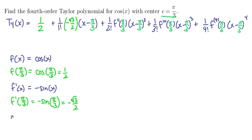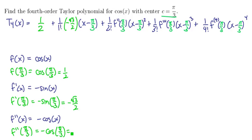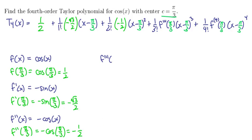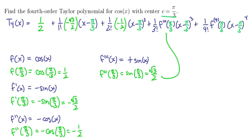Next, the second derivative of cosine — which is the derivative of negative sine — is negative cosine of x. Plugging in pi over 3 gives negative 1 half, since that's the cosine of 60 degrees. Then the third derivative: the derivative of negative cosine is positive sine. Evaluating at pi over 3 gives the sine of 60 degrees, which is root 3 over 2.